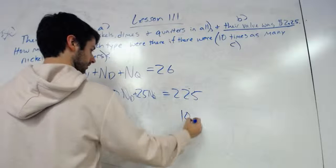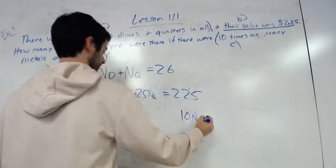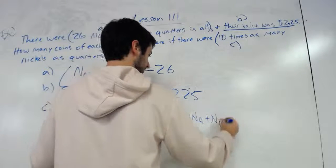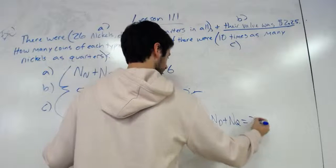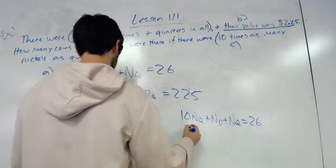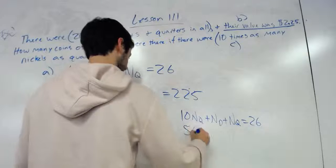I'm going to say 10 times the number of quarters plus the number of dimes plus the number of quarters equals 26.